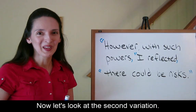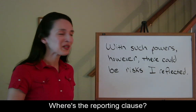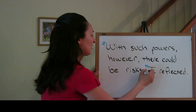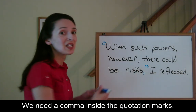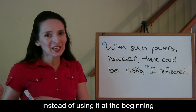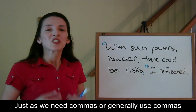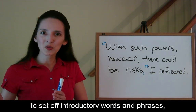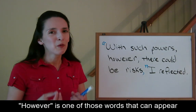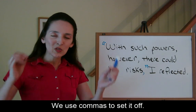Now let's look at the second variation: 'With such powers, however, there could be risks,' I reflected. The reporting clause is in a final position, so we have a period. We add quotation marks, and instead of a period inside, we need a comma inside the quotation marks. I also changed the position of 'however' — instead of using it at the beginning as an introductory word, it now appears in the middle, breaking the flow of the sentence. Just as we use commas to set off introductory words, we also use commas when words break the flow. 'However' can appear at the beginning, in the middle, or at the end of a sentence, and we use commas to set it off.